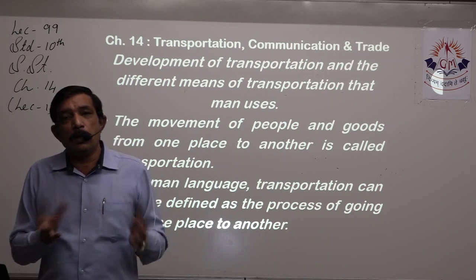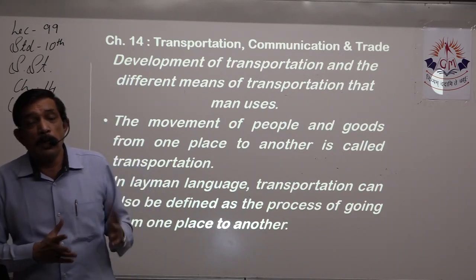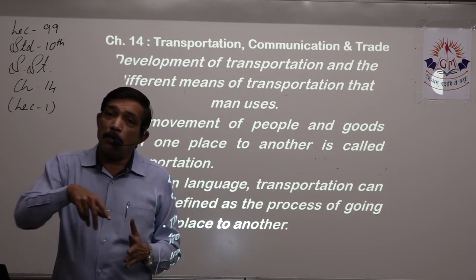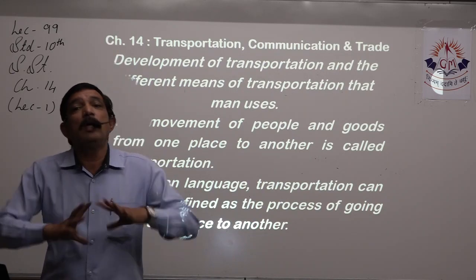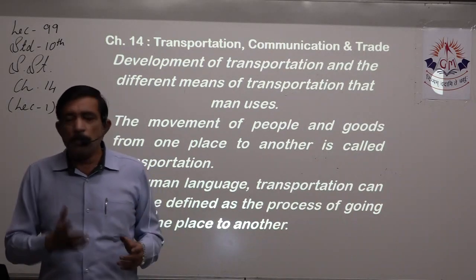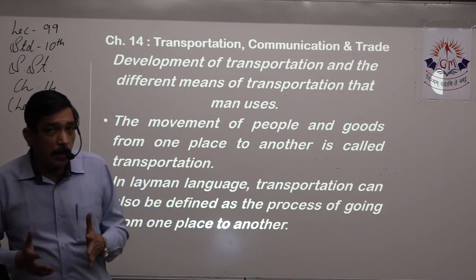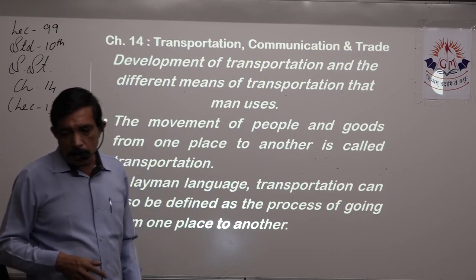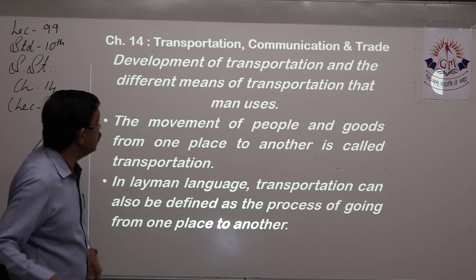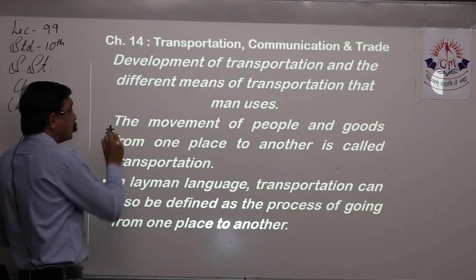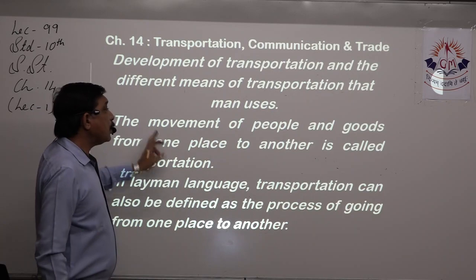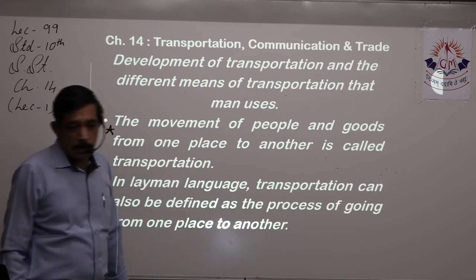In the beginning nothing was available. When men were in the primitive stage they were hunters and gatherers who walked on foot. Then wheels came, development happened, and now we have transportation based on wheels. The movement of people and goods from one place to another is called transportation — that is the definition of transportation.